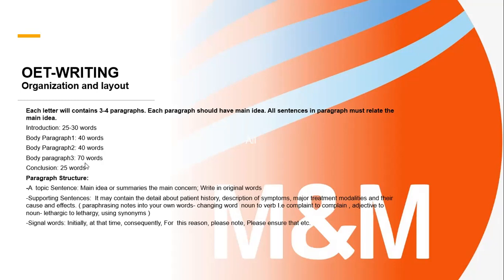In body paragraph one, write the socioeconomic history. In body paragraph two, write a summary of previous visits. In body paragraph three, write today's history, which should be expanded. This is not a standard format you must follow — it is just for your understanding. According to the importance of the information, you write it down accordingly.